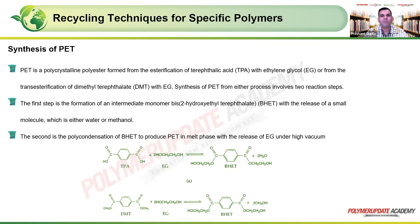Next is polyethylene terephthalate (PET). PET is a polycrystalline polyester formed by the esterification of terephthalic acid and ethylene glycol — a dibasic acid and a diol — or by the trans-esterification of dimethyl terephthalate with ethylene glycol. PET synthesis occurs in two reaction steps, with the first being the formation of an intermediate monomer called BHET (bis-hydroxyethyl terephthalate).